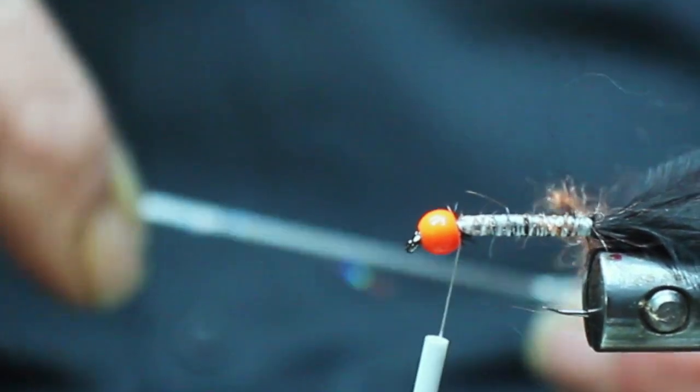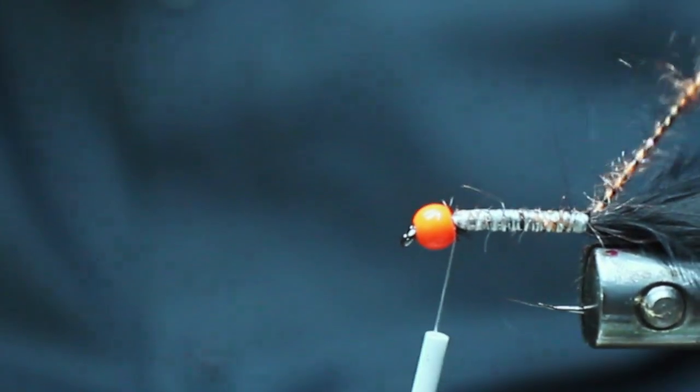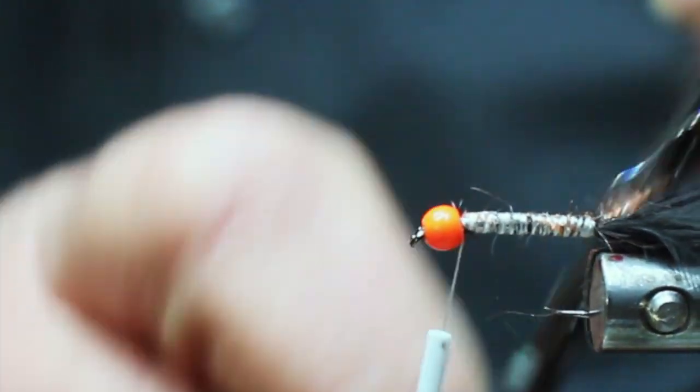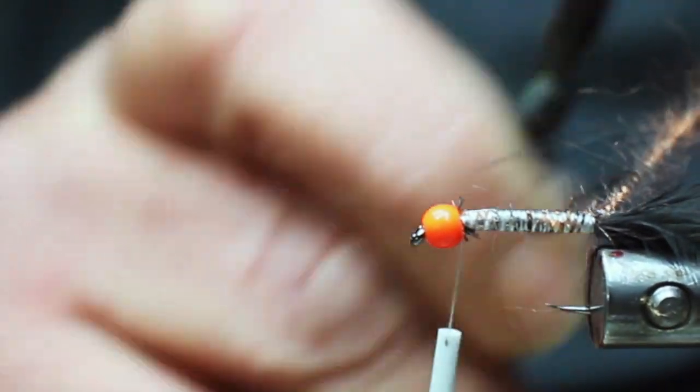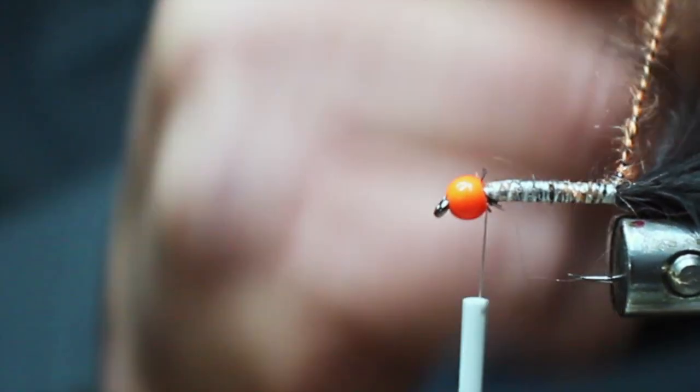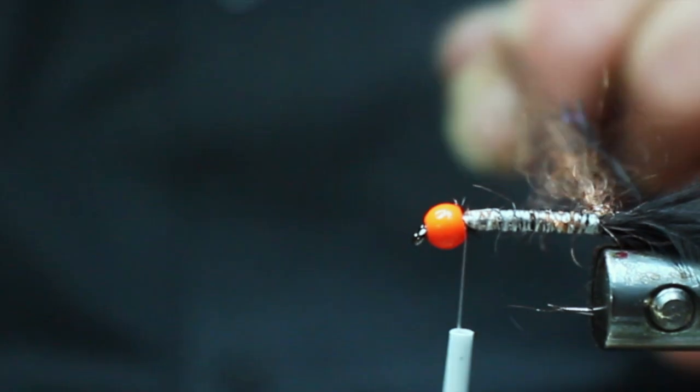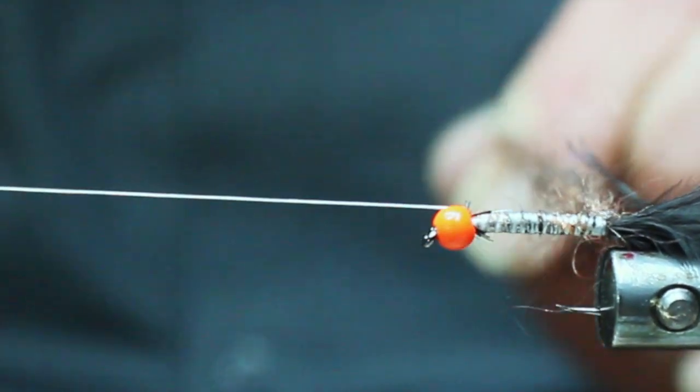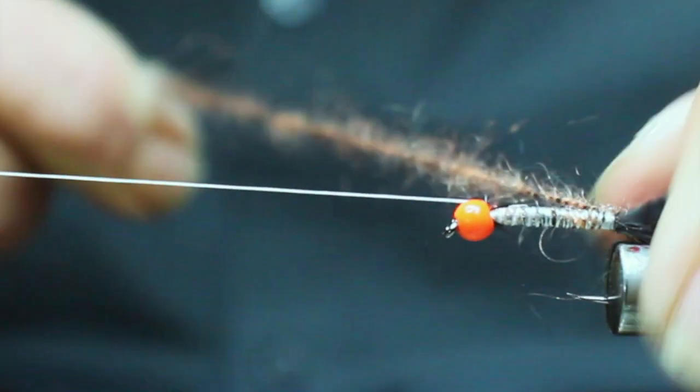As you can tell, it's a pretty fine measure. The rope is pretty thin still, and I can brush out. And then just spin this up the hook shank.